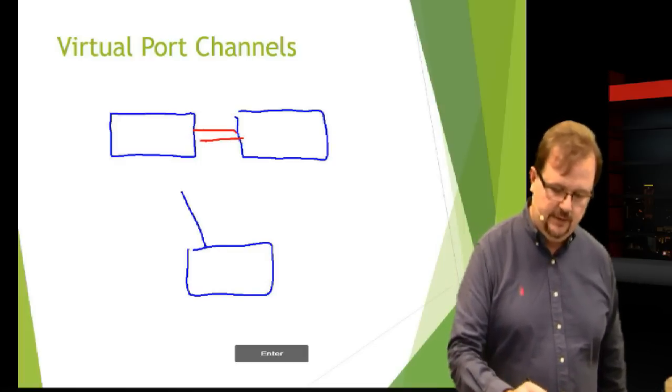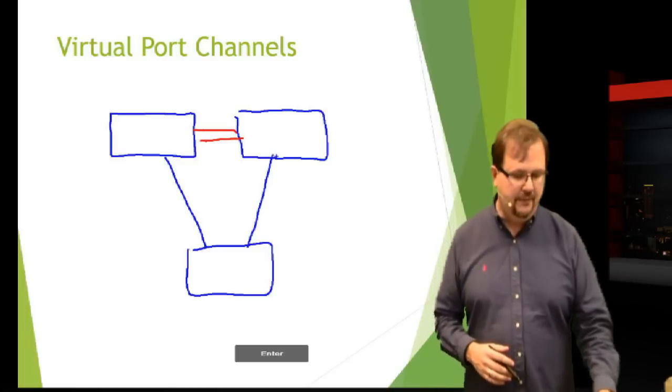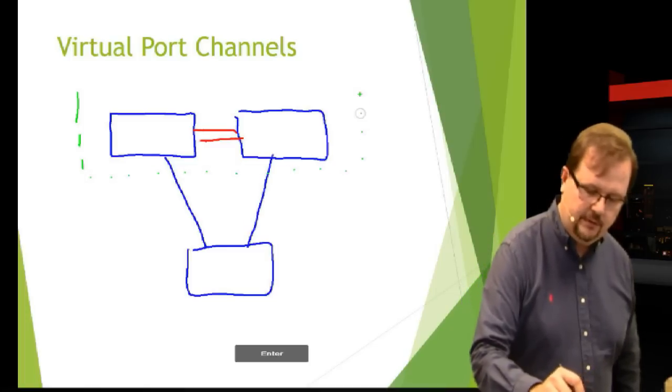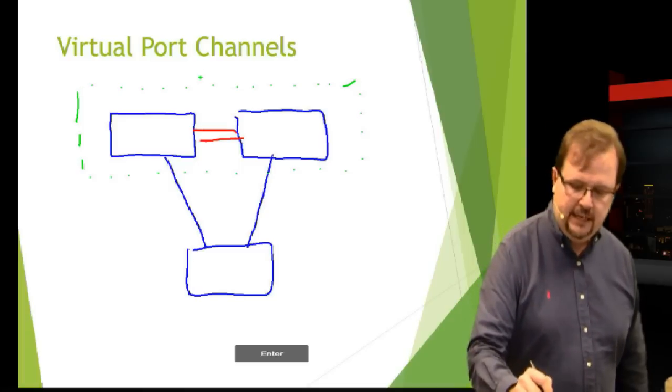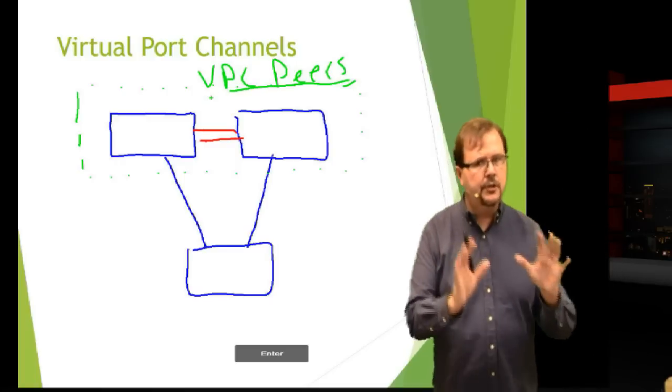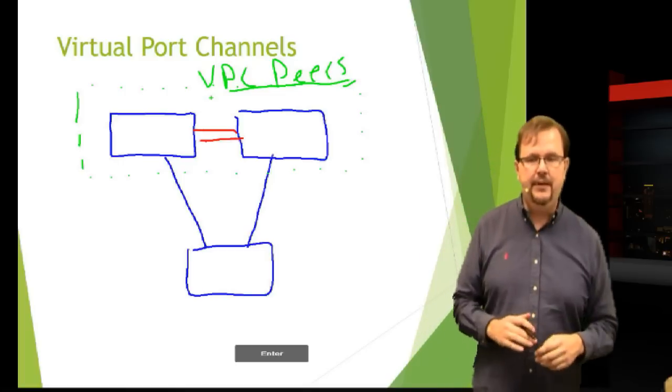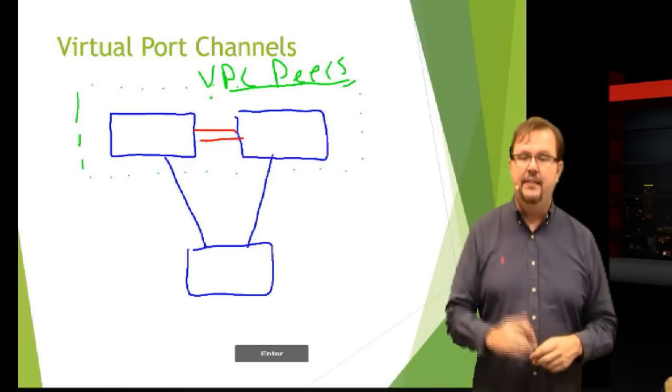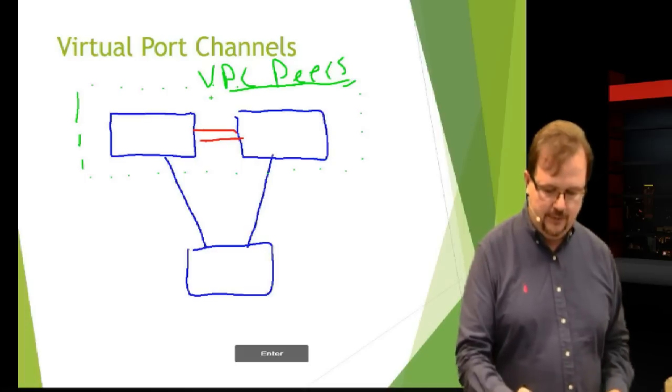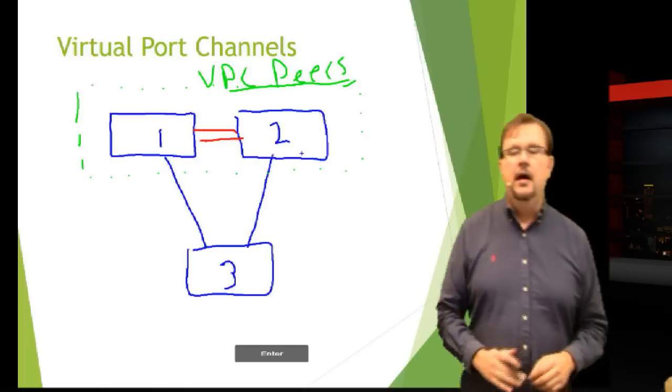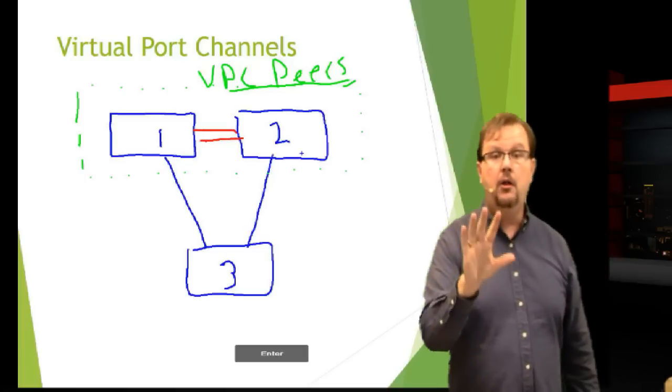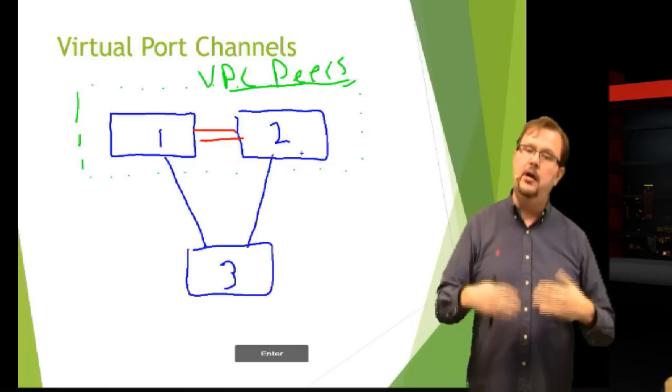These two switches up top are going to become something called VPC peers. These two VPC peers have a special link, special configuration, a domain ID, all kinds of other special stuff. But these two VPC peers, what they do fundamentally, is they lie to the southbound switch. They pretend to be one logical switch. From this southbound switch down here - let's call it switch number three and call them switch number one and two - switch three, when he looks northbound over these two links that he has, he does not see two separate switches. He sees one logical switch. Those two switches pretend to be one logical switch.